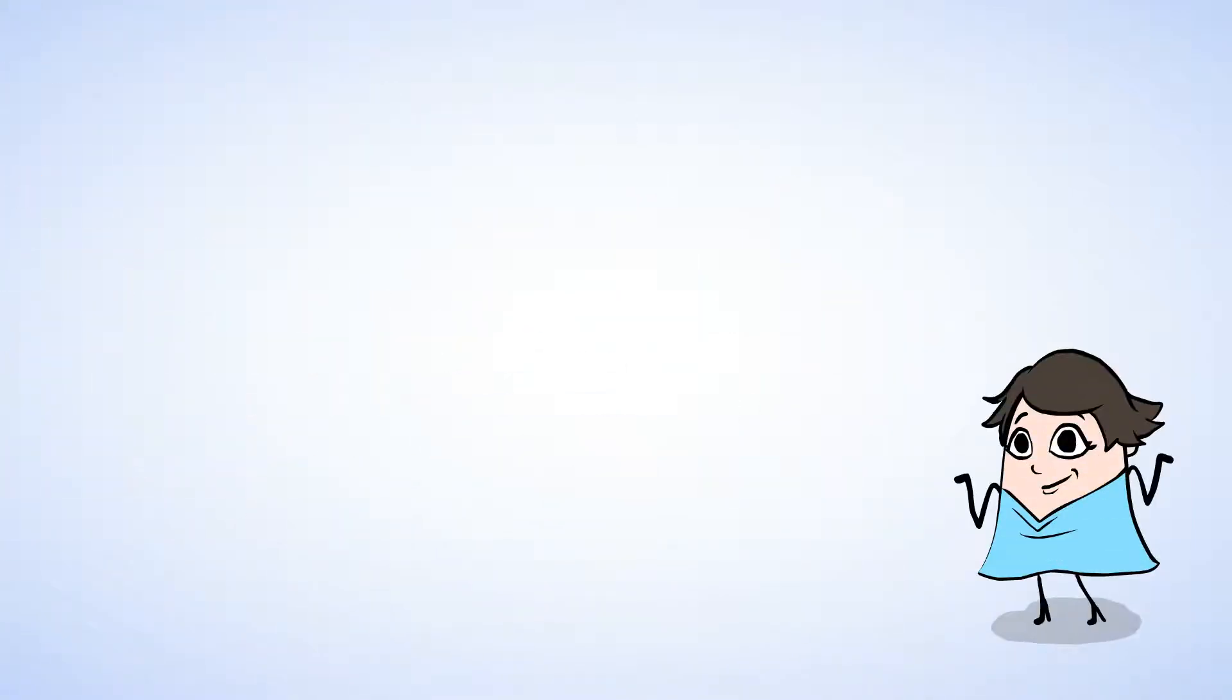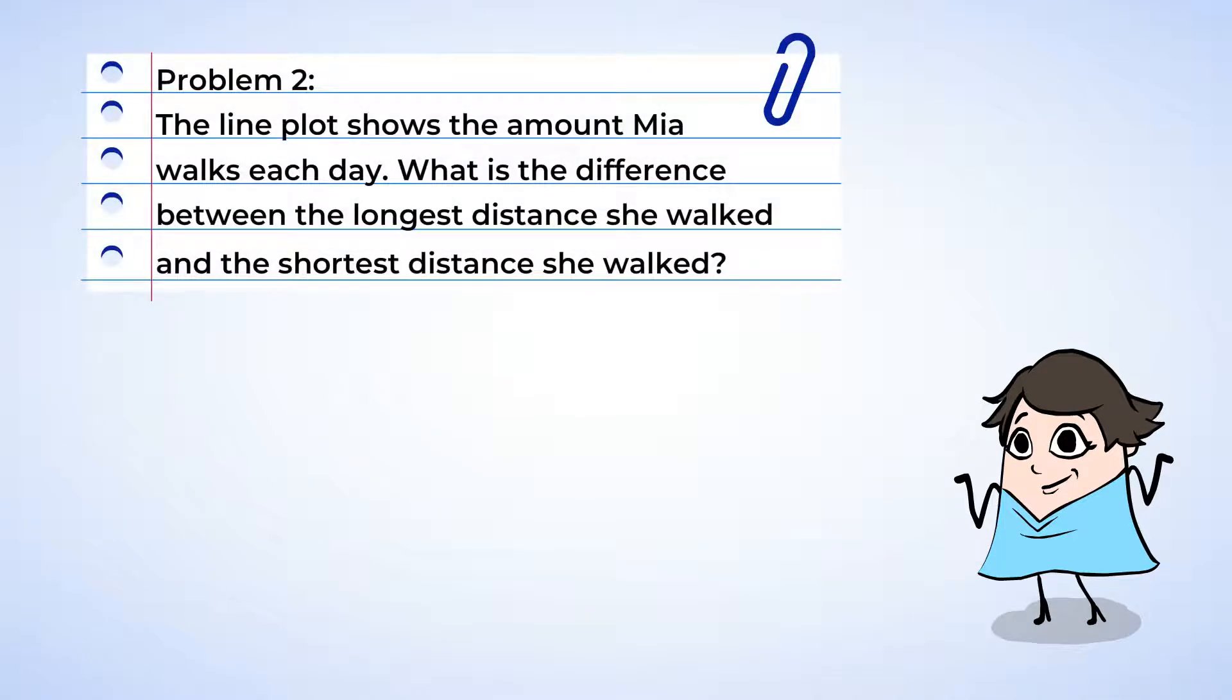All right, let's walk on over to this new problem. The line plot shows the amount Mia walked each day in miles. What's the difference between the longest and shortest distance she walked? Let's start by finding the longest and shortest distance she walked.